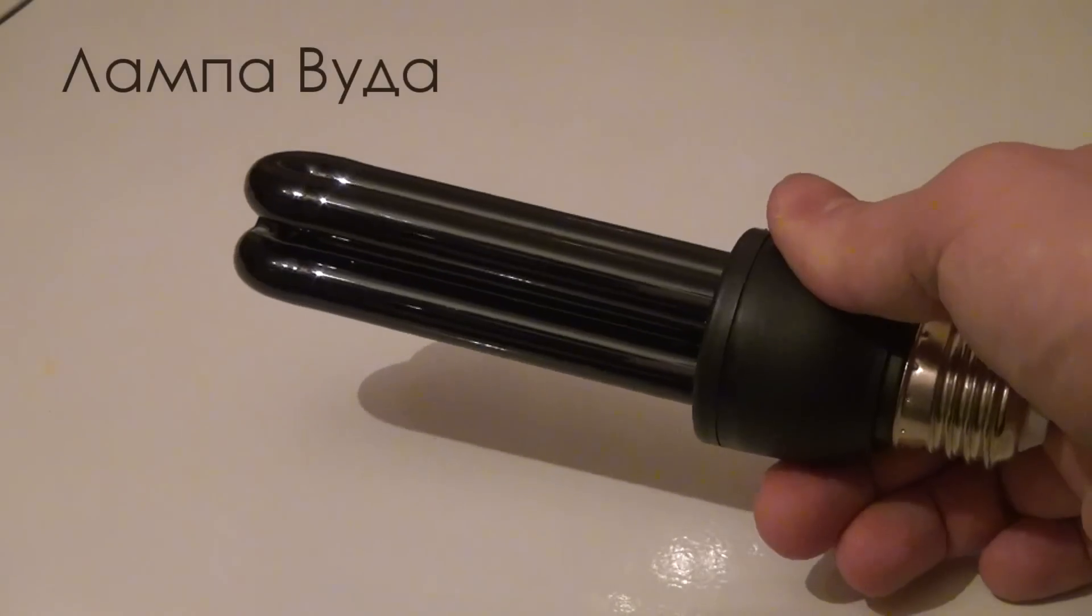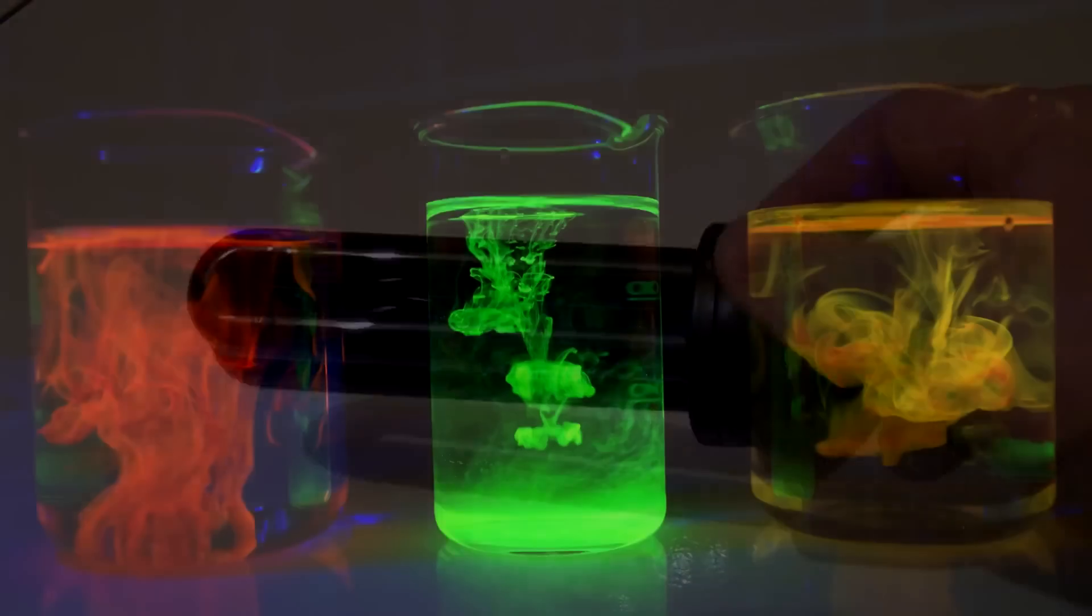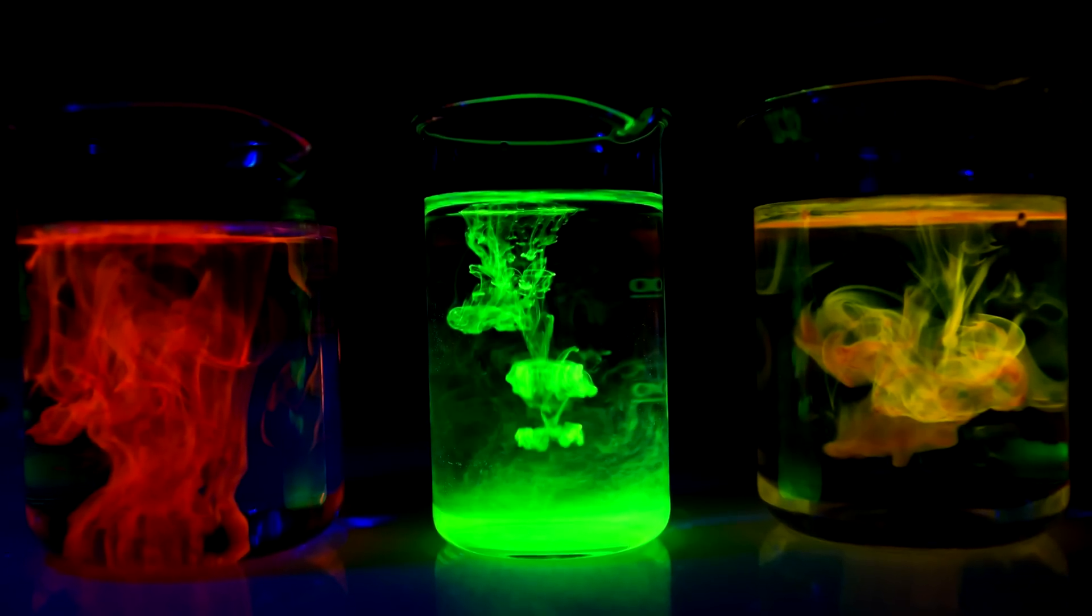You can find out about any other material that may glow under UV light on your own. For that you can buy a Wood's lamp or a UV flashlight and do some cool fluorescent stuff by yourself.